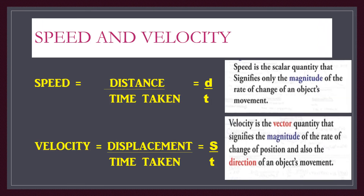The difference between speed and velocity: speed is the change of distance over time, and distance is a scalar quantity with magnitude only. Velocity is the change of displacement over time; displacement is a vector quantity with both magnitude and direction.